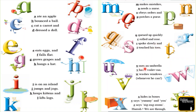U - uses an umbrella. V - has a violet van. W - washes windows whenever he can. X - hides in boxes. Y - says yummy and you. Z - says zigzag zoom. Hurrah we are through!